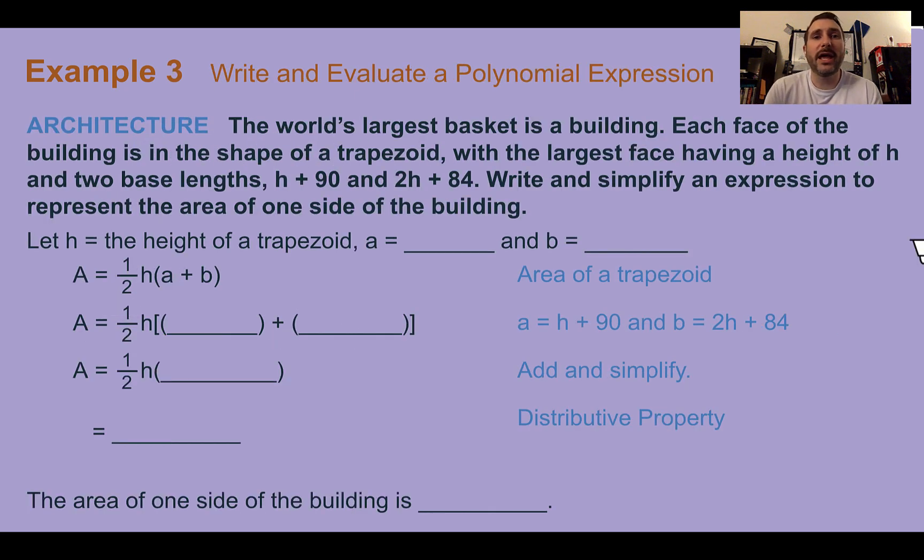Example 3. Write and evaluate a polynomial expression. Our real context here is architecture. The world's largest basket is a building. Each face of the building is in the shape of a trapezoid, with the largest face having a height of h and two base lengths, h + 90 and 2h + 84. Write and simplify an expression to represent the area of one side of the building.